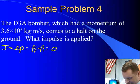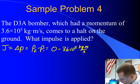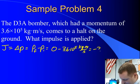Our final momentum is zero because it stops on the ground, minus 3.6 times 10 to the fifth kilogram meters per second, which is going to be negative 3.6 times 10 to the fifth kilogram meters per second.